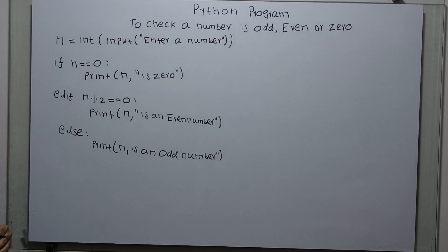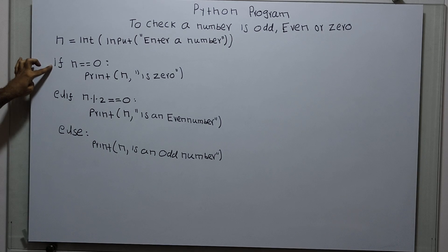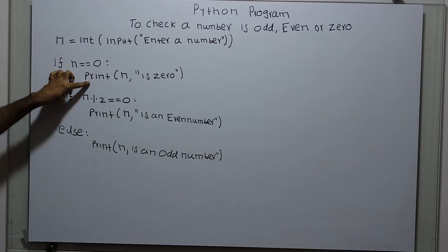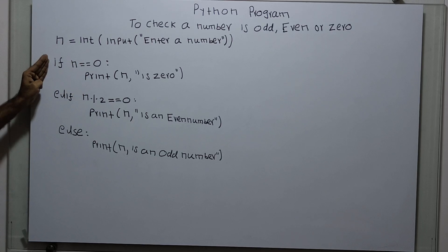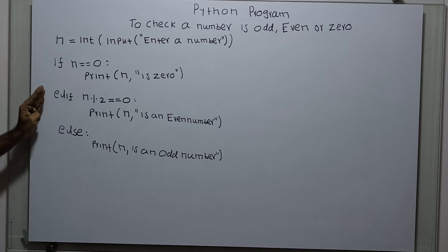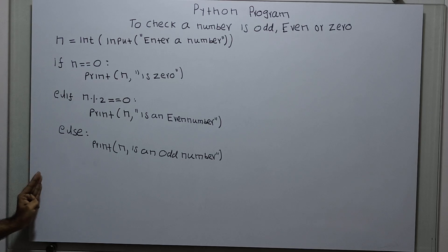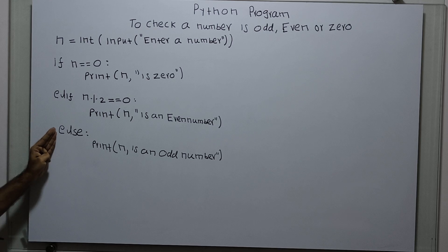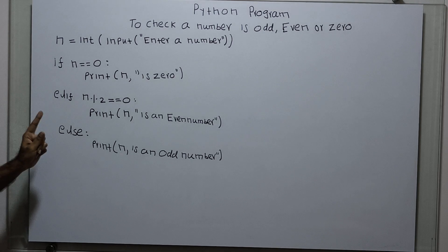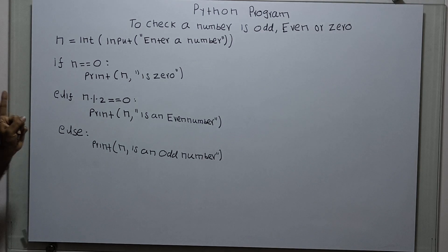So this is the program. In this if/elif/else structure: if the condition is true, only the if block will get executed and control will come out of the entire structure. If if is false, then we check elif. If that condition is true, only the elif block is executed. If elif is also false, the else will get executed. Only one block will get executed at a time — that is the advantage of the if/elif/else statement.